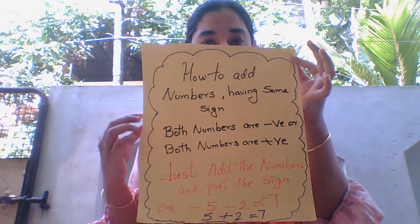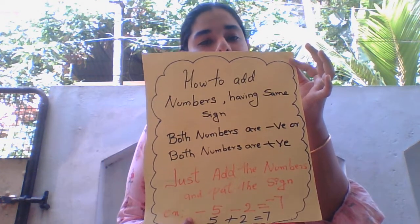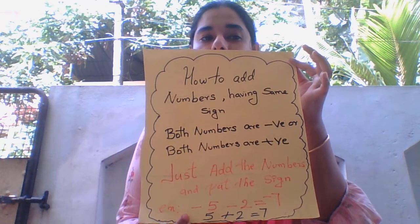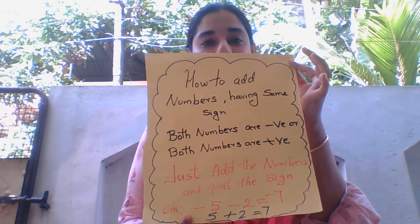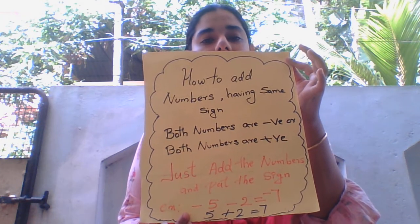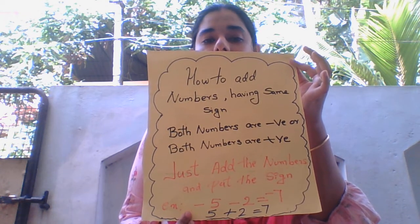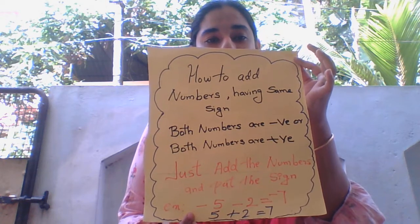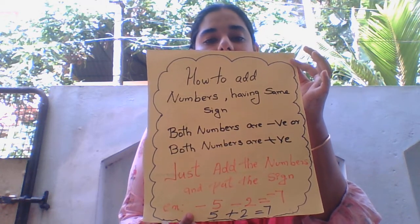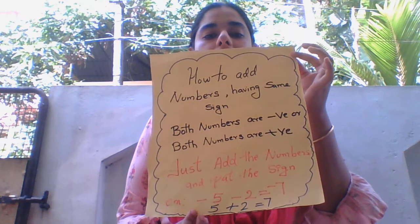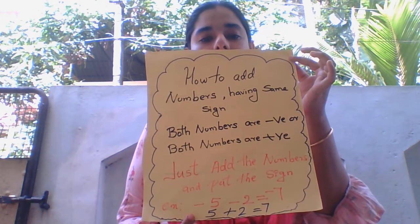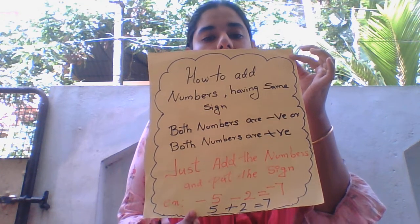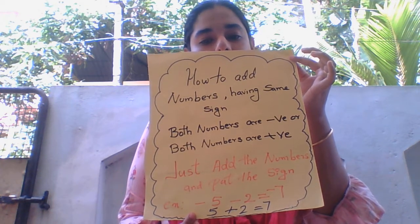So both are positive numbers. Then how will you add the numbers negative 5 and negative 2? So both are negative numbers. How will we add here? Just add the numbers: 5 plus 2 equals 7, and put the negative sign — that's all, negative 7. So if both the numbers are positive or both are negative, just add the numbers and put the sign.